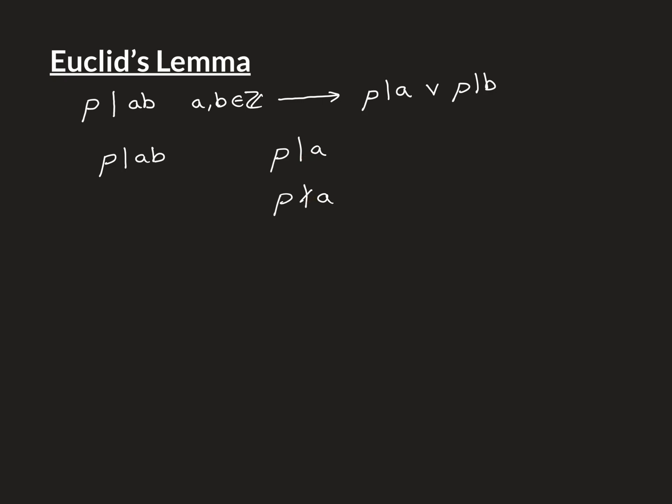So one of these two has to be true. It's either the case that P divides A or it's the case that P doesn't divide A. If P does divide A, then it is true that P divides A or P divides B. So we have proven it.